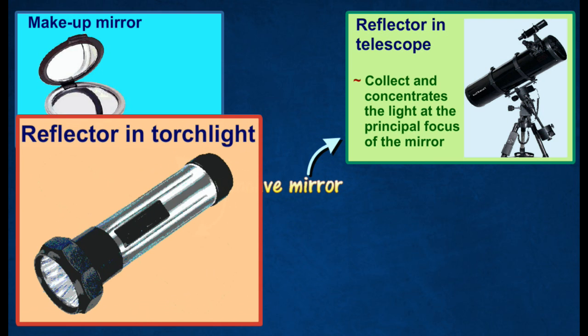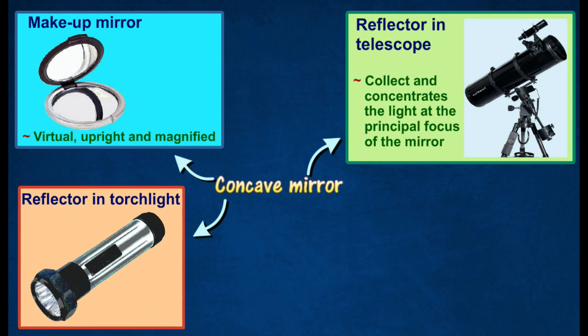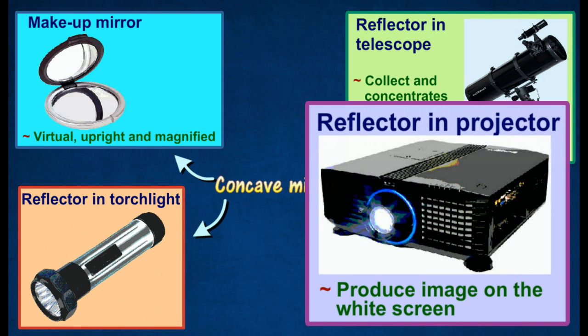Concave mirrors are also used as reflectors in torches and flashlights. Overhead projectors use concave mirrors to produce images on white screens.